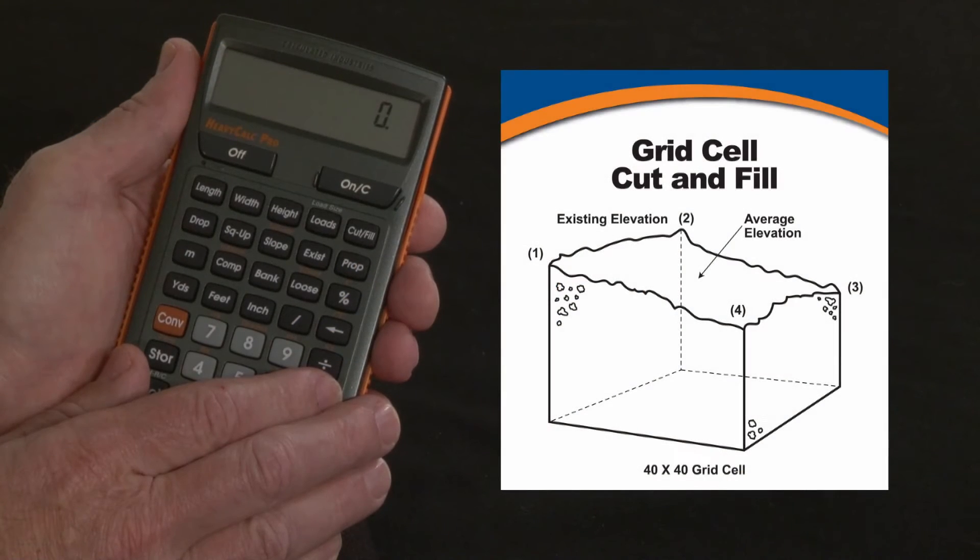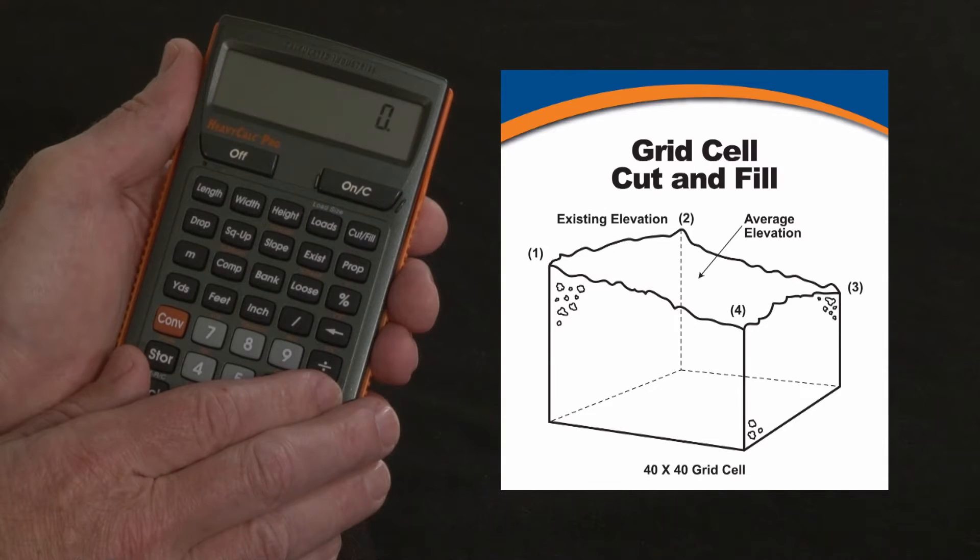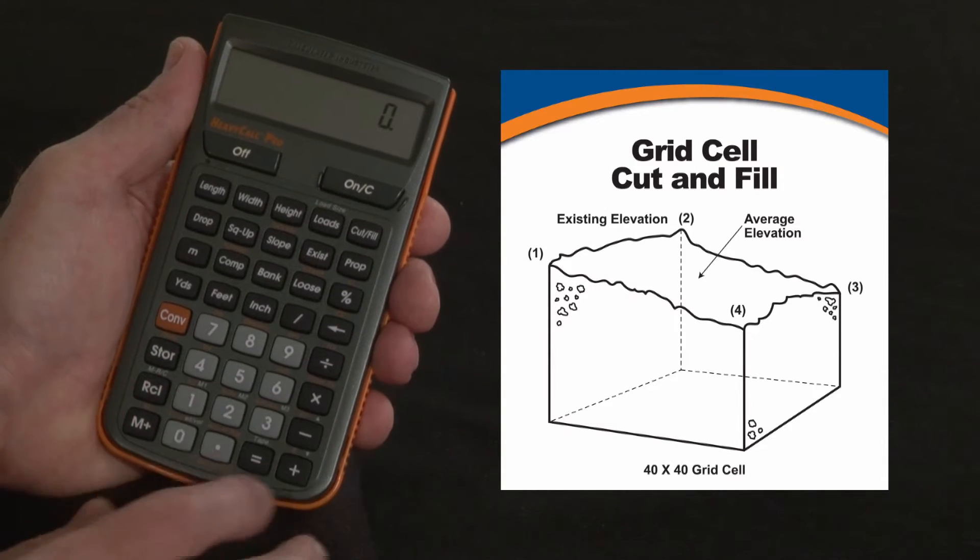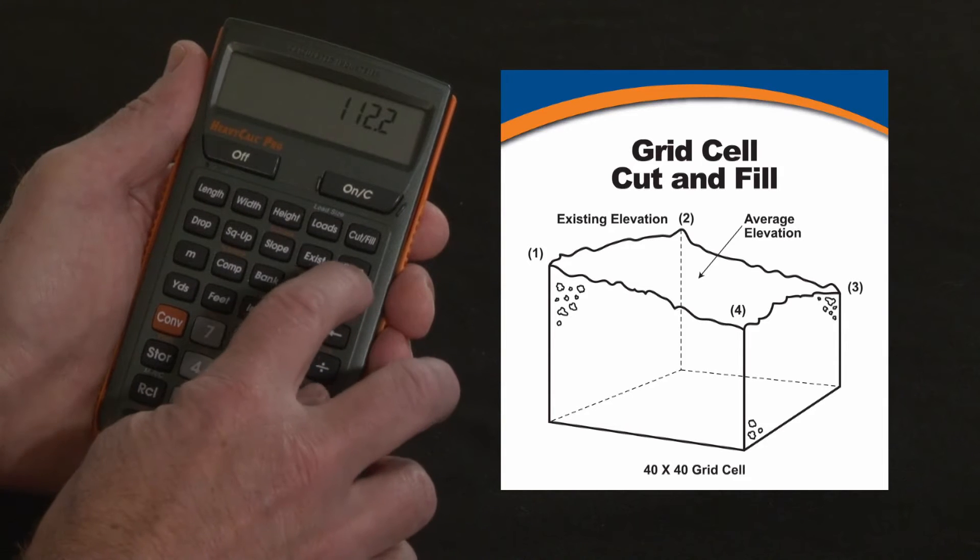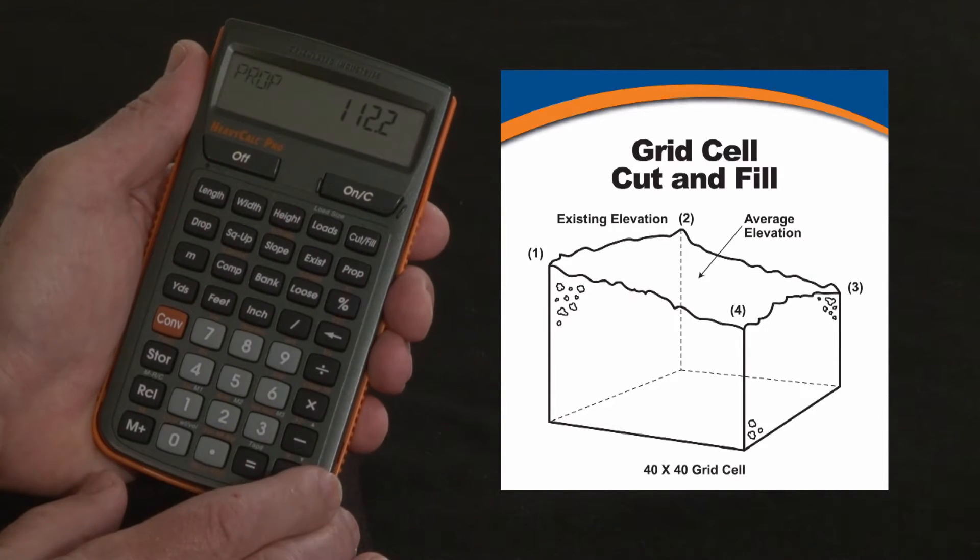Now let me show you how to use your Heavy Calc's cut and fill functions. Say you've got a plan that calls for an elevation of 112.2, we call that our proposed grade for this particular spot.